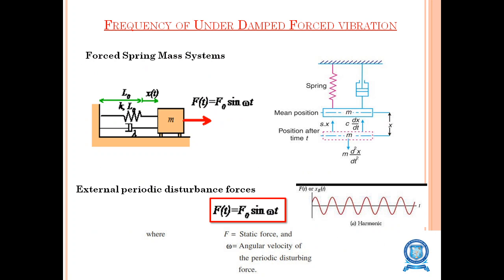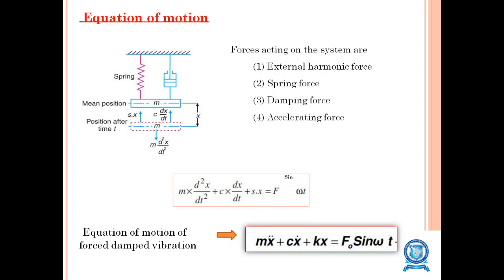For the frequency of underdamped forced vibration, consider a forced spring-mass system in the vertical direction. The external periodic disturbance is ft equal to f naught sine omega t, where the mass acts downwards due to gravity. The external periodic disturbance ft equals f naught sine omega t, where f is the static force and omega is the angular velocity of the periodic disturbing force.